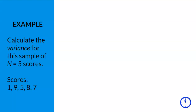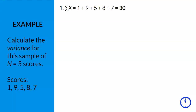The lecture example is asking us to calculate the variance for this sample of n equals 5 scores. The scores are 1, 9, 5, 8, and 7. So let's get started. Step 1 is to calculate the sum of x. We will add 1 plus 9 plus 5 plus 8 plus 7 and get 30. We then calculate the mean, which is just the sum of x divided by n. In this case, it is 30 divided by 5, and the mean equals 6.